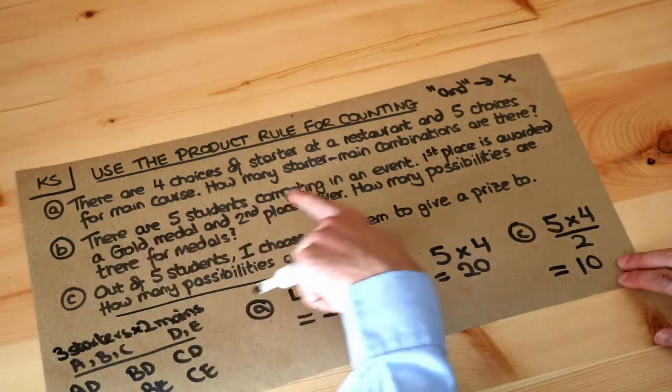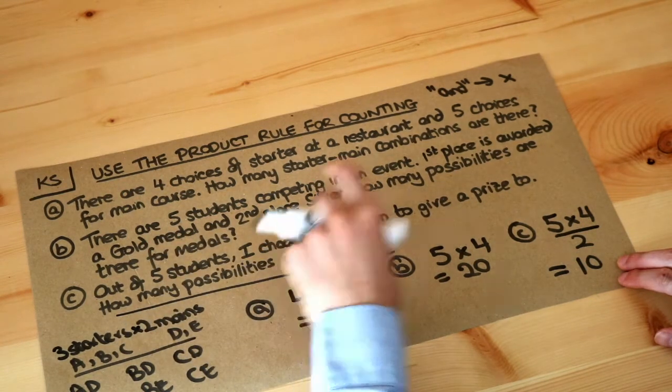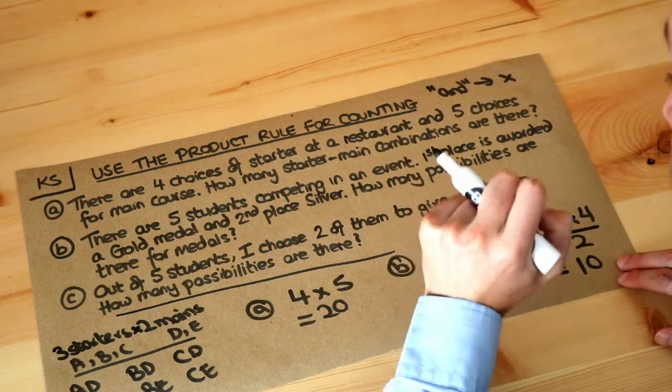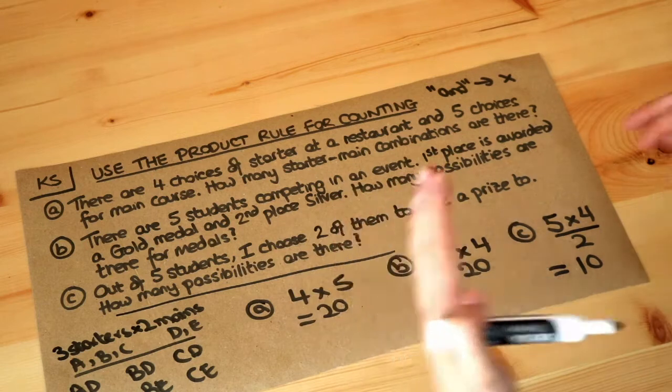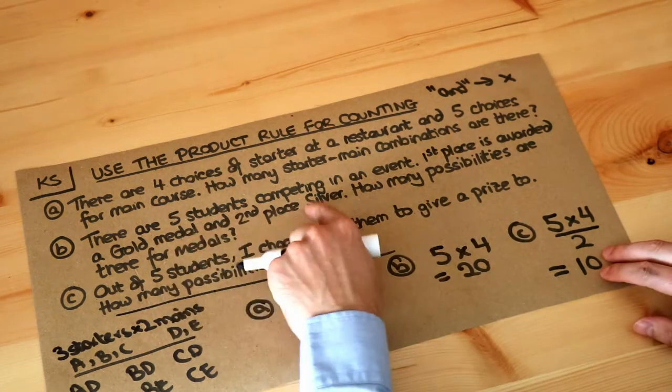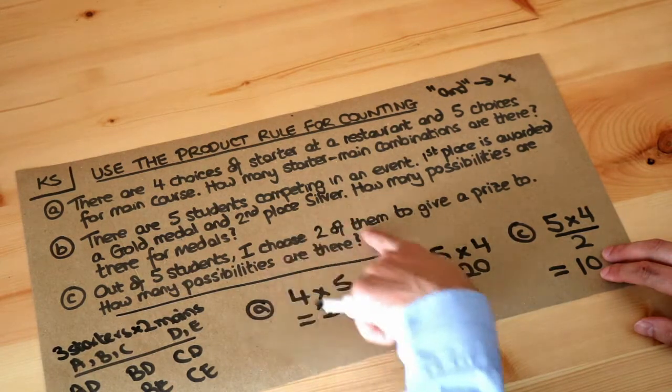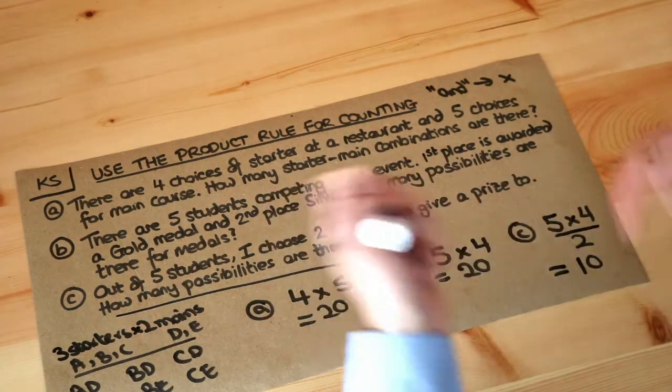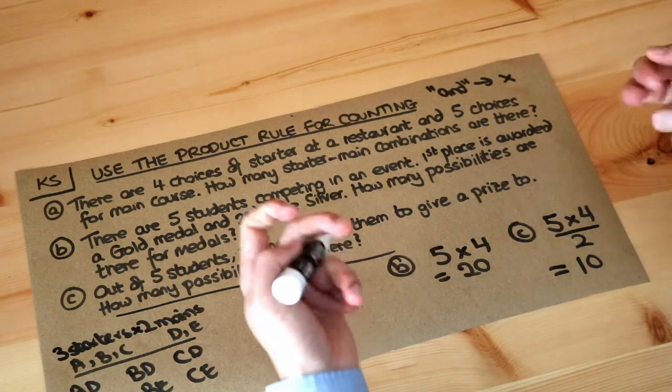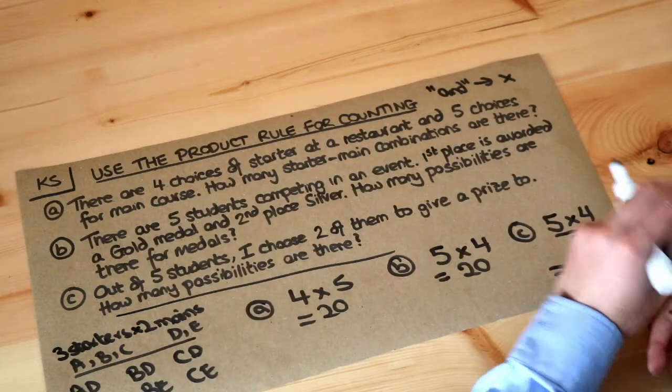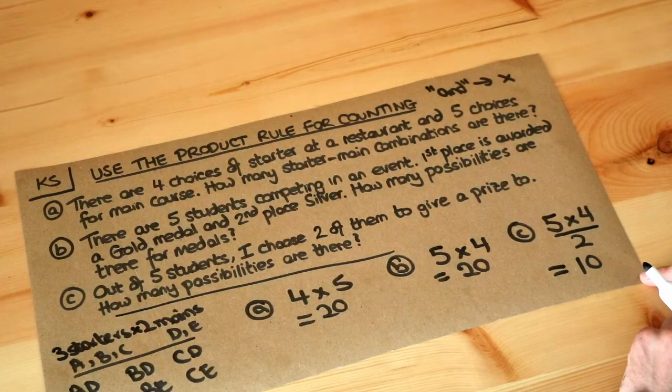Whereas in part B if I was to give a gold medal to Bob and a silver medal to Charlie that is a separate scenario than if you gave Charlie the gold medal and Bob the silver medal. That is a different outcome. So the order in which you give the two prizes does matter because gold is different from silver. Whereas for this question C it doesn't matter whether you give Bob the prize first or Charlie the prize second. Because ultimately Bob and Charlie have both got prizes. You don't care about which way round they are. So we divide by two to account for duplicates.